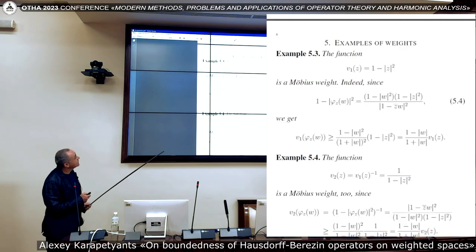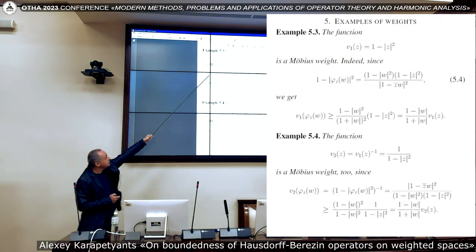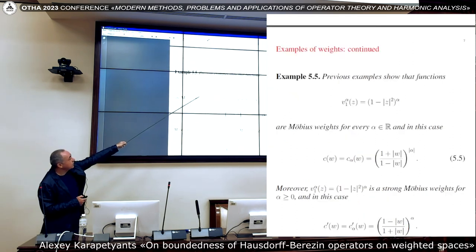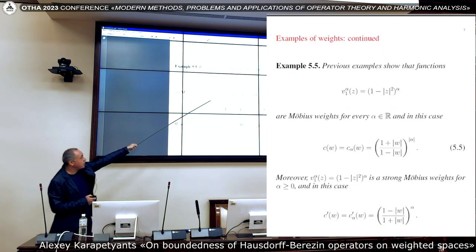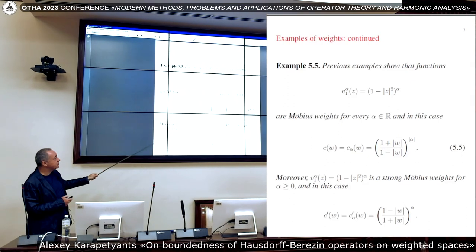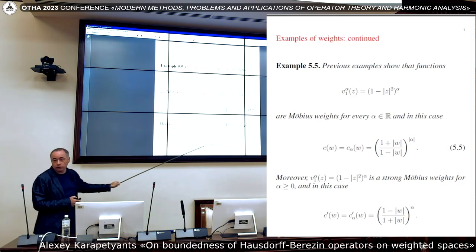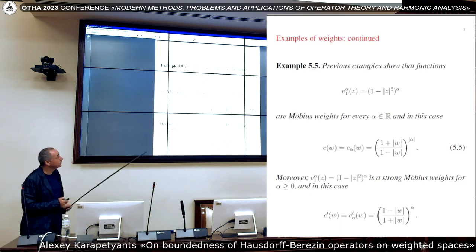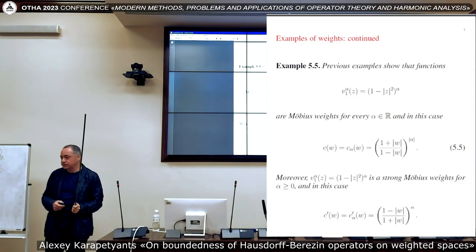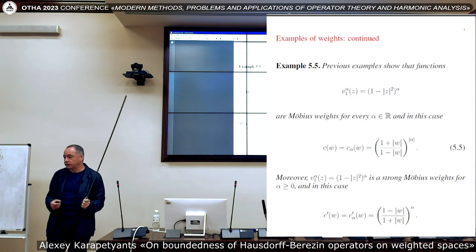Examples. So this plain weight is a Möbius weight. The inverse, like 1 divided by this, is also a Möbius weight. Power function (1 - |z|²)^α is a Möbius weight with this bound from above, and it's a strong Möbius weight for positive alpha with this bound from below. So we have nice examples of our Möbius weight, so this set is not empty. Besides, it contains very important kind of weight.